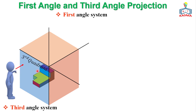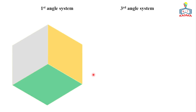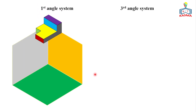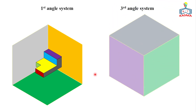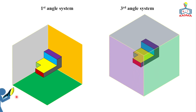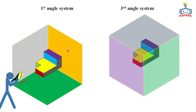The first angle projection is differentiated from the third angle projection with just two cases. To make it simple, for first angle projection we use a light system — if you give a light source from the observer's side, the shadow of that object will be created behind it, on the projection plane.